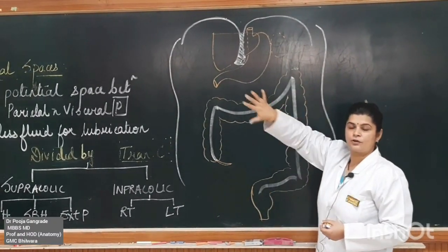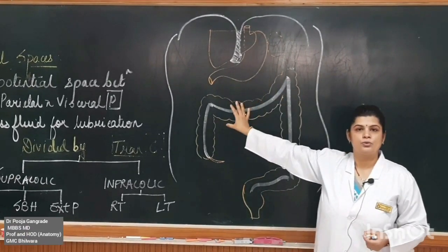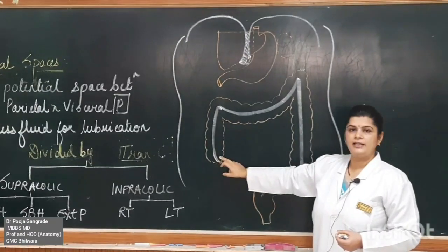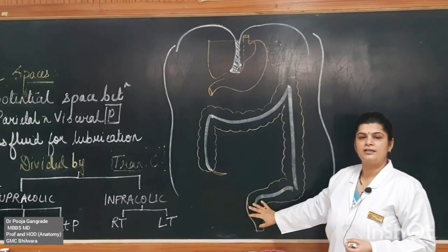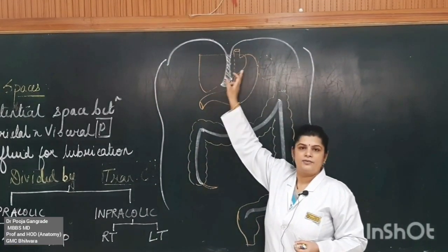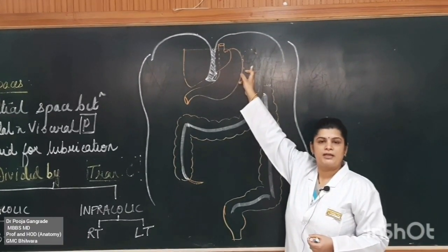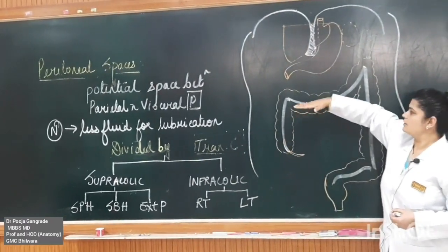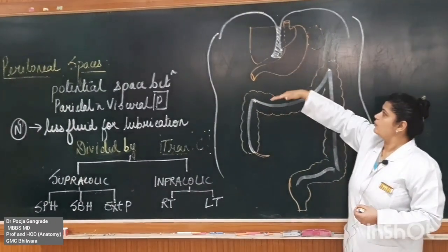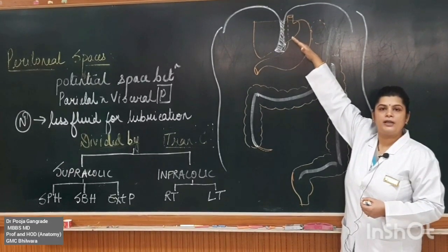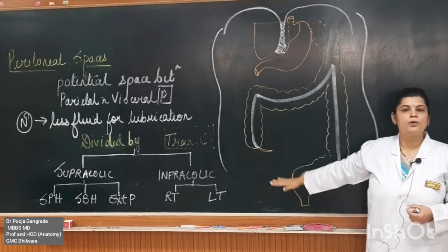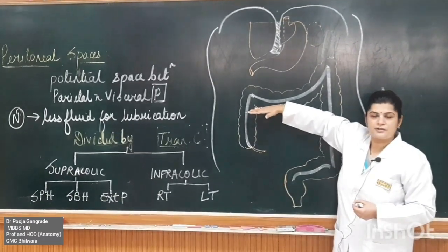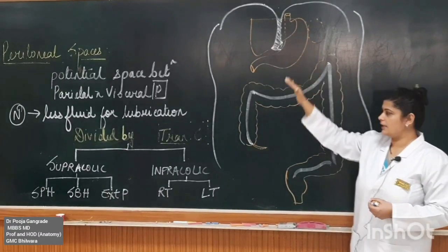This is an anterior view diagram with all the organs in situ. We have the ascending colon, transverse colon, descending colon, sigmoid, rectum, liver, stomach, and spleen. The transverse colon divides the cavity — the part above it is the supra-colic compartment, and the part below it is the infra-colic compartment.